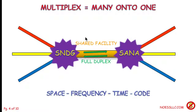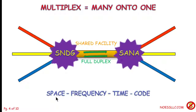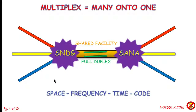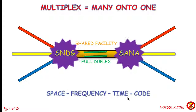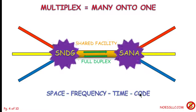So how can I do this shared facility? I can share it in space, frequency, time, or code — those are the most common methodologies. Space is a bit of a stretch for some people, frequency and time are very common, and code is also now very common.